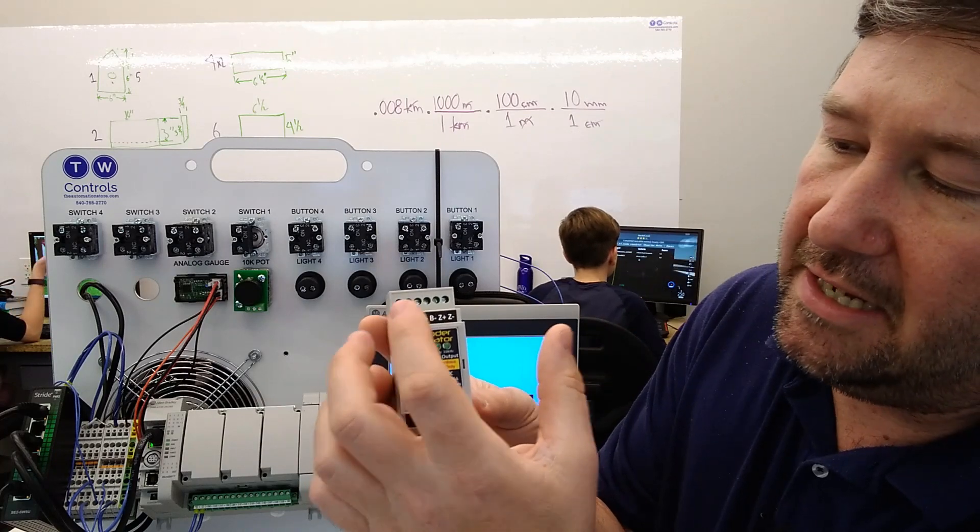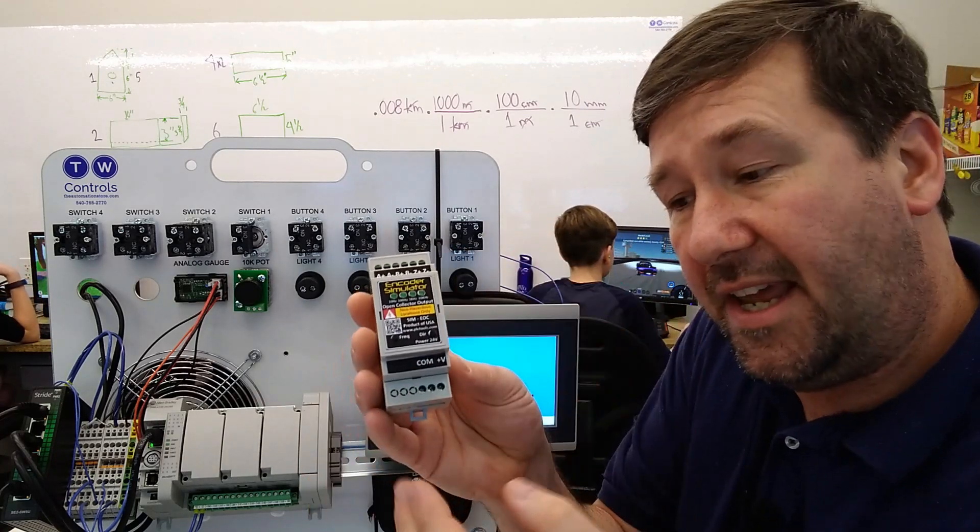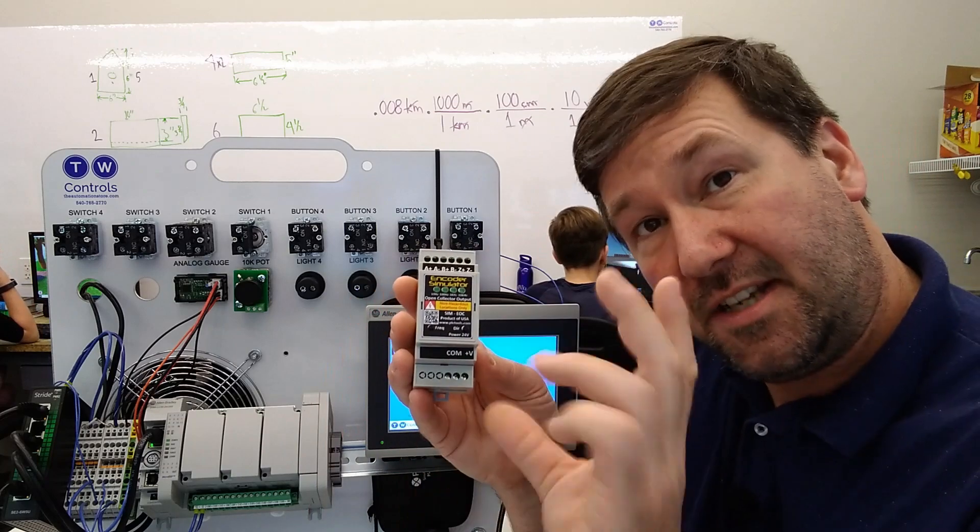And what that means is that our A, A0, B, B0, Z, and Z0 are going to be taken to the common each time it switches.